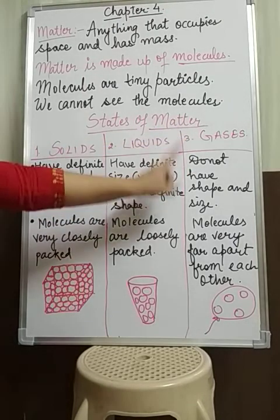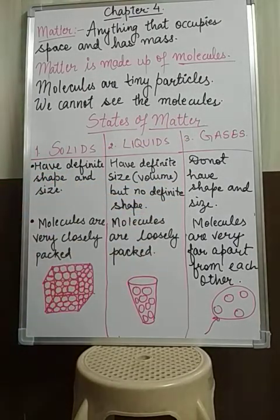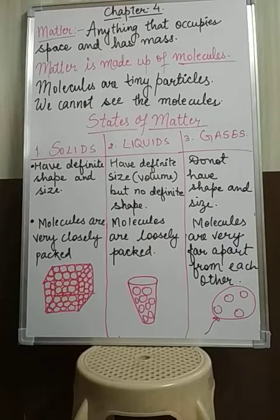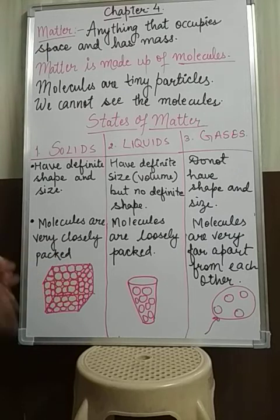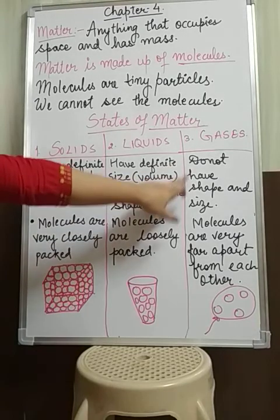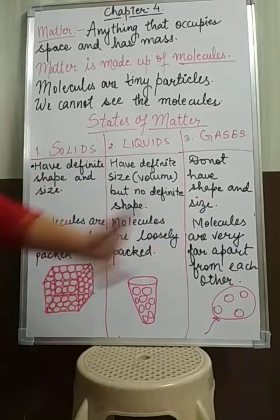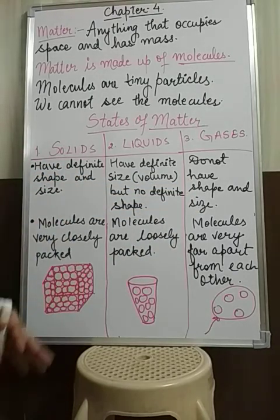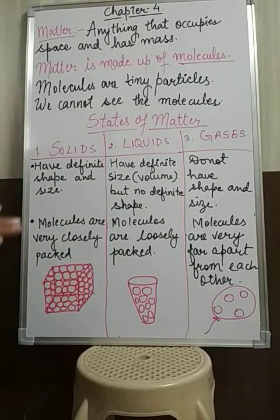Next, gases. Gases do not have a fixed shape and size. Examples include LPG, perfumes, air fresheners, incense sticks, or mosquito coils. When we spray them, they fill the whole available space — they do not have a particular shape and size. They can take the shape and size of the available space.